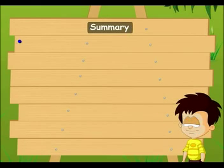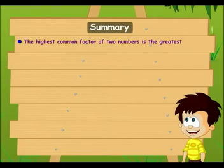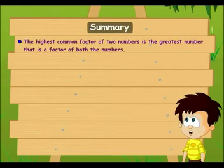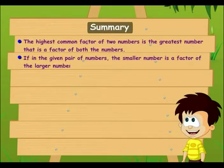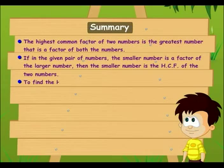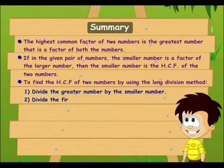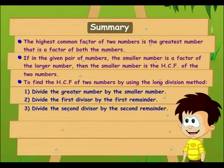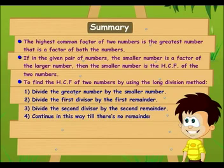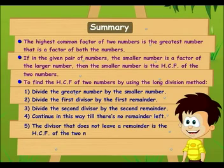It's time for a recap. The highest common factor of two numbers is the greatest number that is a factor of both numbers. If the smaller number in a given pair is a factor of the larger number, then the smaller number is the HCF of the two numbers. To find the HCF using the long division method: divide the greater number by the smaller number; divide the first divisor by the first remainder; divide the second divisor by the second remainder; continue until there is no remainder left. The divisor that does not leave a remainder is the HCF of the two numbers.